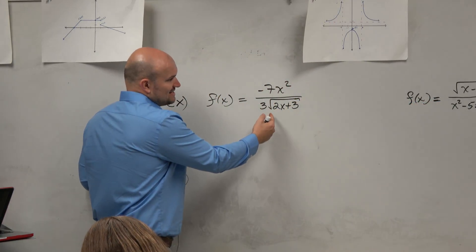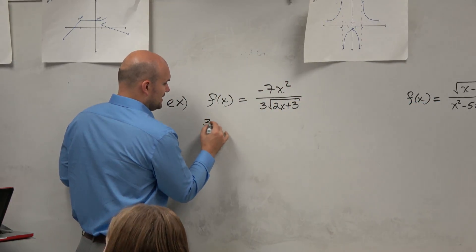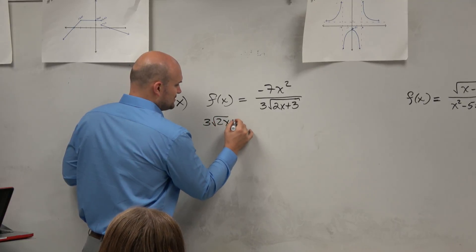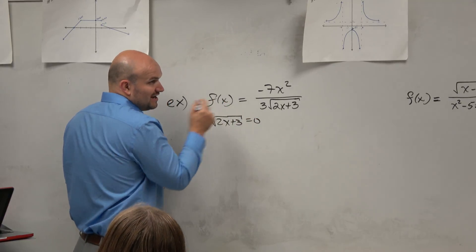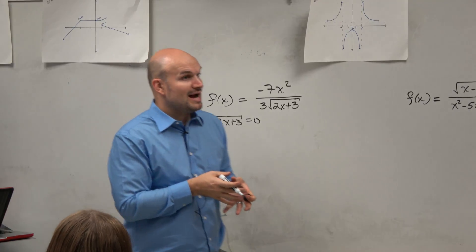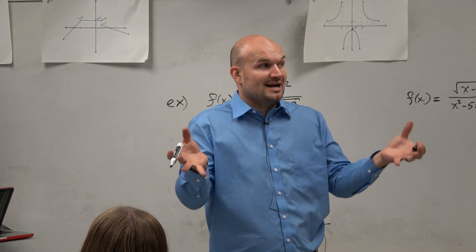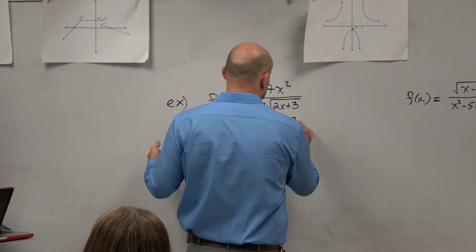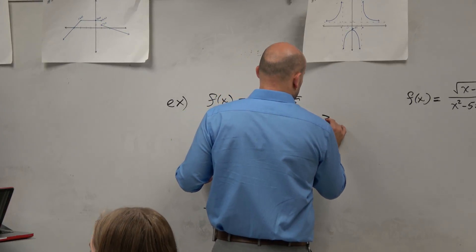And we also know that, so we could say 3 times square root of 2x plus 3 equals 0. We want to find the values that make that equal 0. And then we also have a radical. So all I said was take the radicand and make it greater or equal to 0. OK?